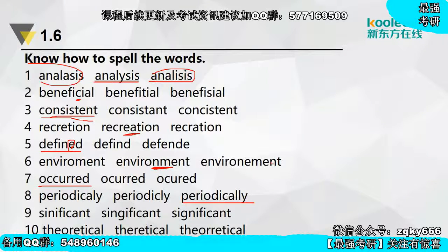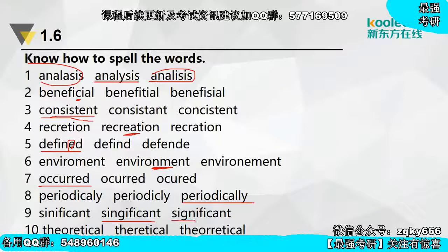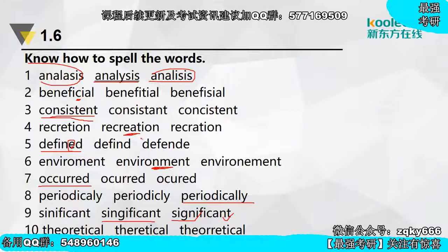应该是两个L。第九个significant，根据它的发音，应该是significant，这个是对的。第十个theory变成theoretical，直接把Y变成E然后加tical就可以了。就像这样，我们要做到大部分高频词，只要它不是认知词汇，我们都应该能把它拼出来。